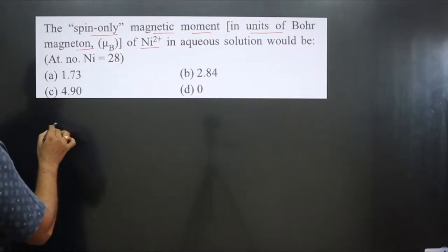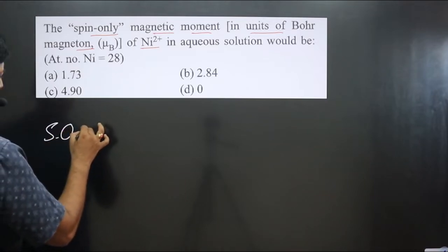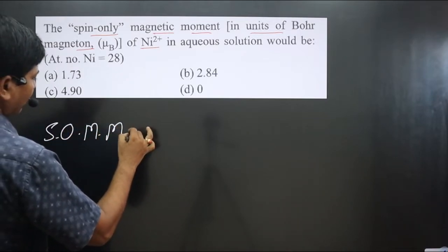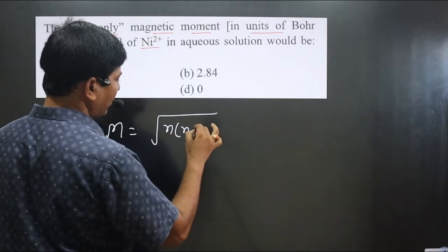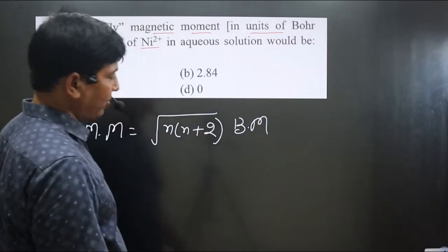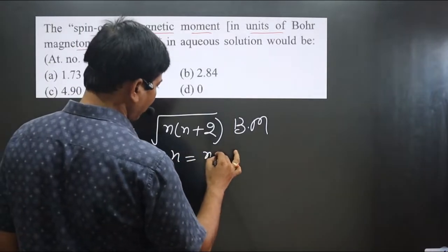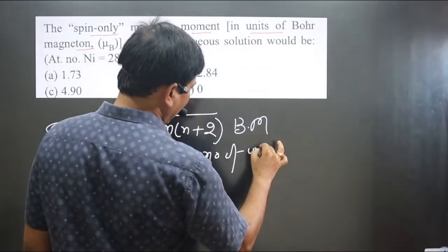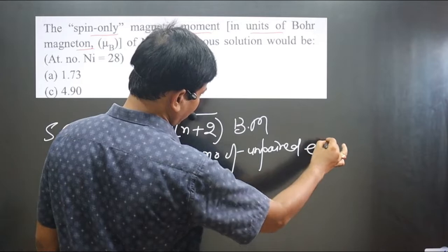Formula we have for spin-only magnetic moment is under root n bracket n plus 2 and Bohr magneton is there. This is the unit. Where n is the number of unpaired electrons.